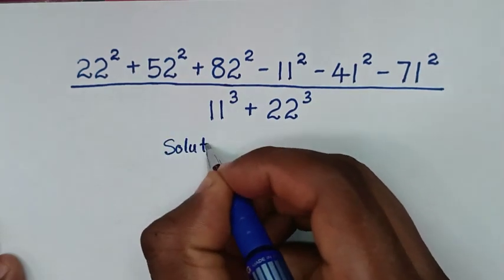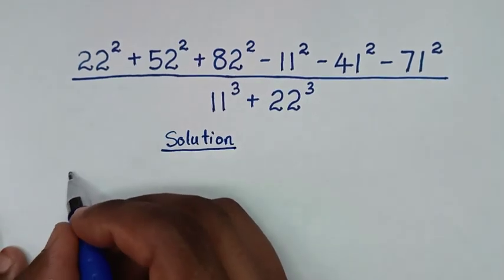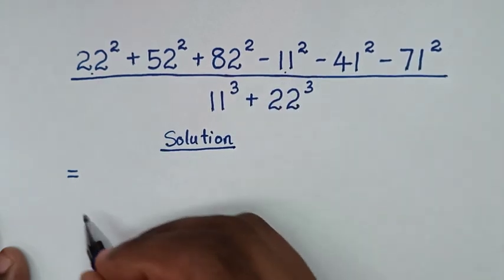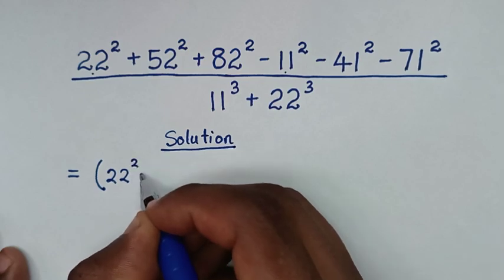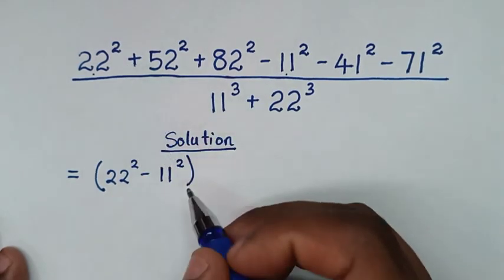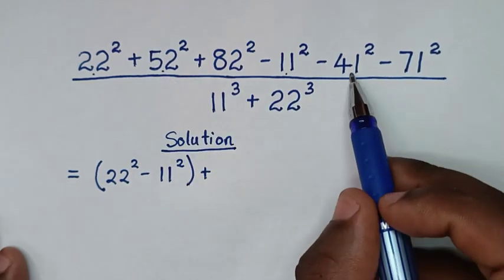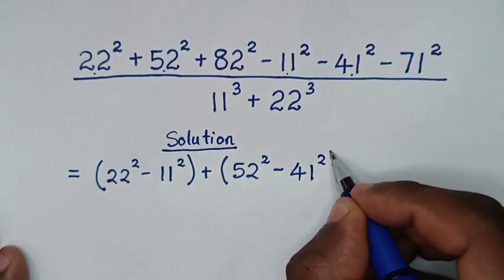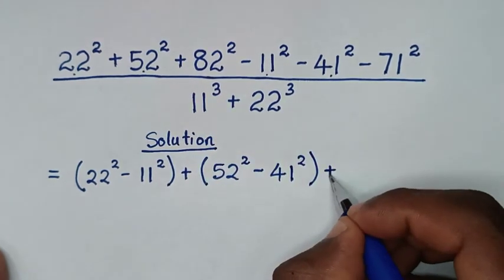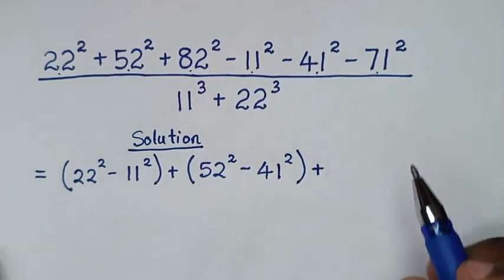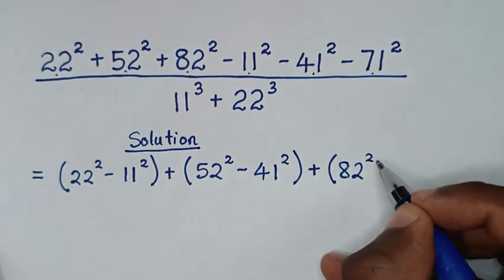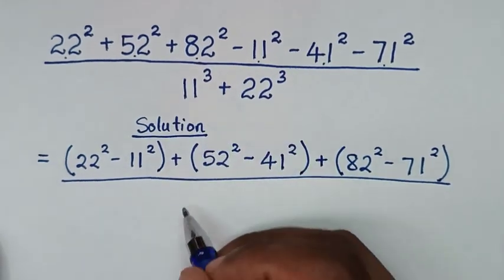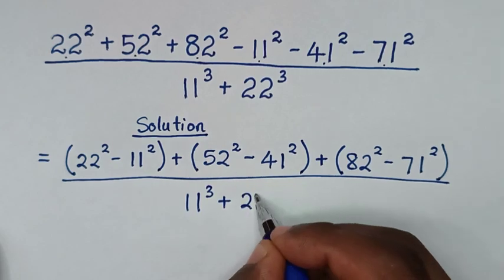Now, solution. It will be equal to — we will make in the form of a perfect square. So we start by placing together 22 power 2 minus 11 power 2 in a bracket, then plus bracket 52 power 2 minus 41 power 2, then plus bracket 82 power 2 minus 71 power 2. Then over, in the denominator, 11 power 3 plus 22 power 3.